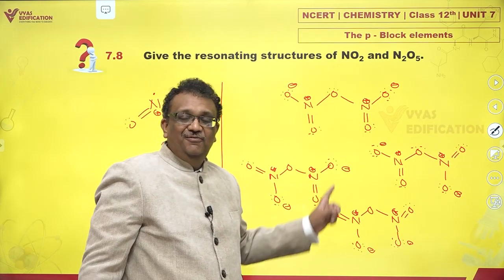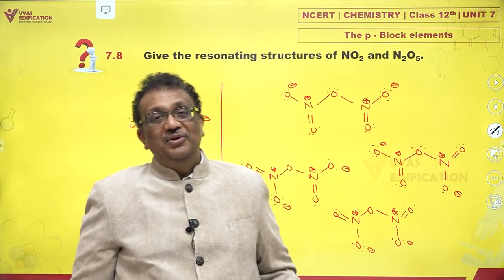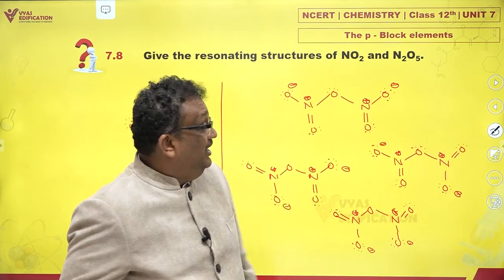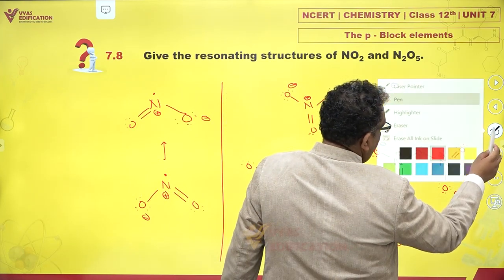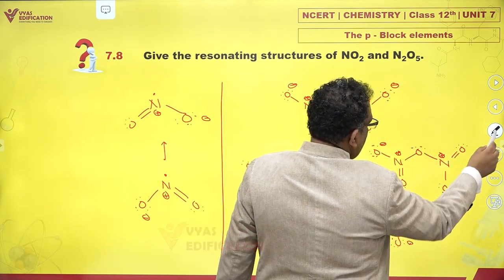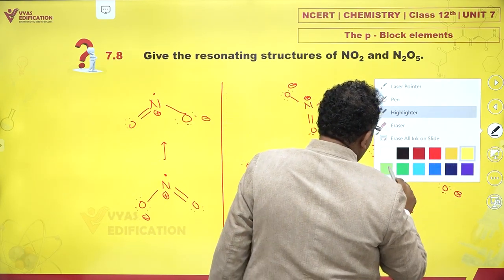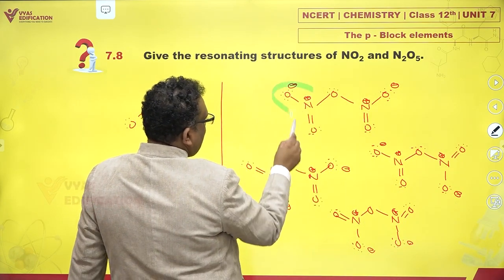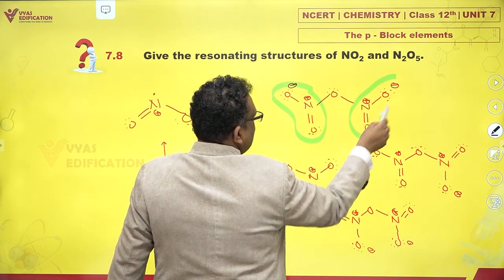One, two, three, four. Four contributing structures of N2O5 amongst which, if you look at the bond order, you would find some very interesting terms. There is resonance here and there is resonance here.